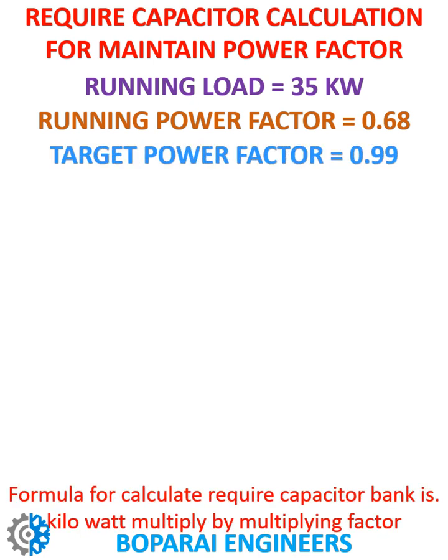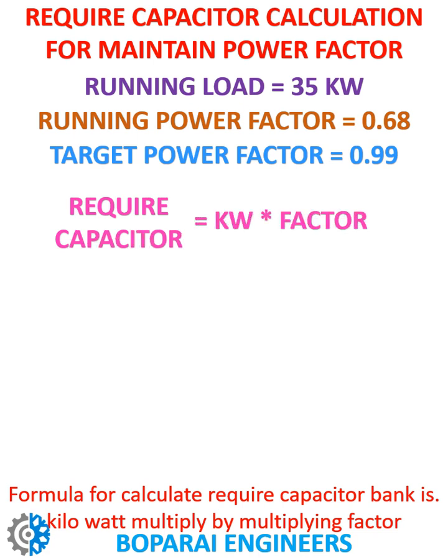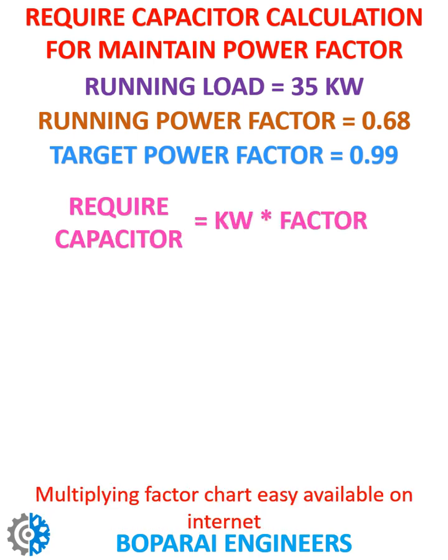The formula to calculate the required capacitor bank is: kW multiplied by a multiplying factor. The multiplying factor chart is easily available on the internet.